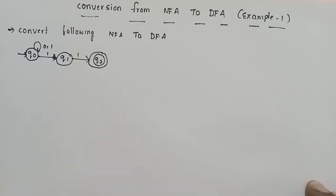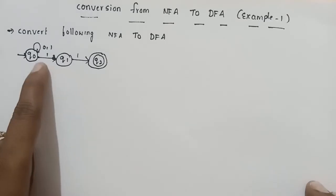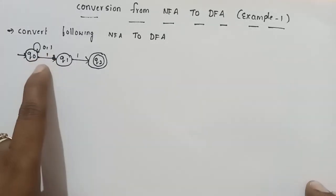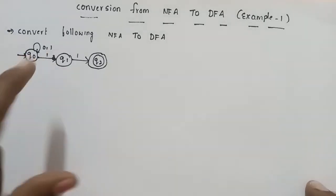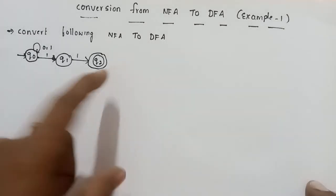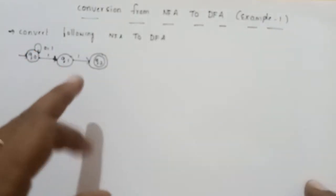We discussed NFA and DFA in the previous video. Now our topic is NFA to DFA conversion. In NFA, for a given input symbol and current state, there can be more than one next state. For example, Q0 on input 1 can go to more than one next state. This non-determinism is what we need to eliminate when converting to DFA.